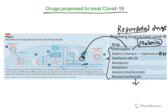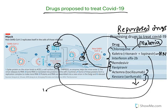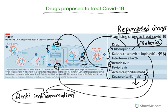Lopinavir and ritonavir are used to treat HIV infection; they inhibit viral protein synthesis. Remdesivir and favipiravir are both anti-viral drugs used to treat Ebola, now being tried on COVID — they inhibit the synthesis of COVID RNA. Tocilizumab and sarilumab are both anti-inflammatory drugs. Since one effect of the virus is triggering a hyperimmune reaction and increased inflammation, these drugs are used to treat that inflammation. Recently, steroids like cortisol have also been used to control this inflammation.